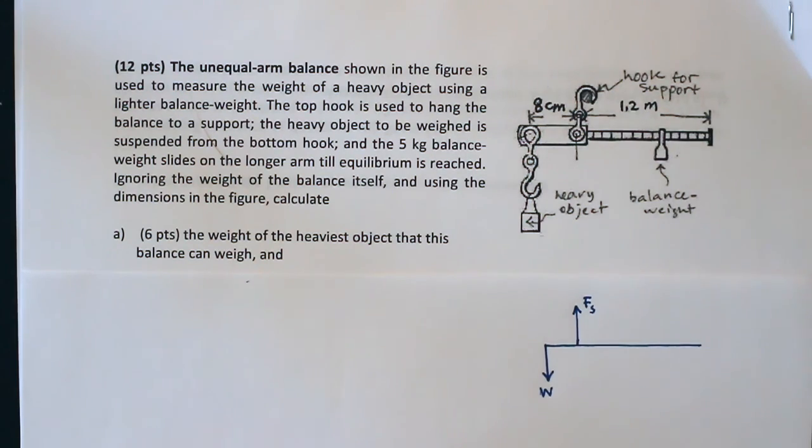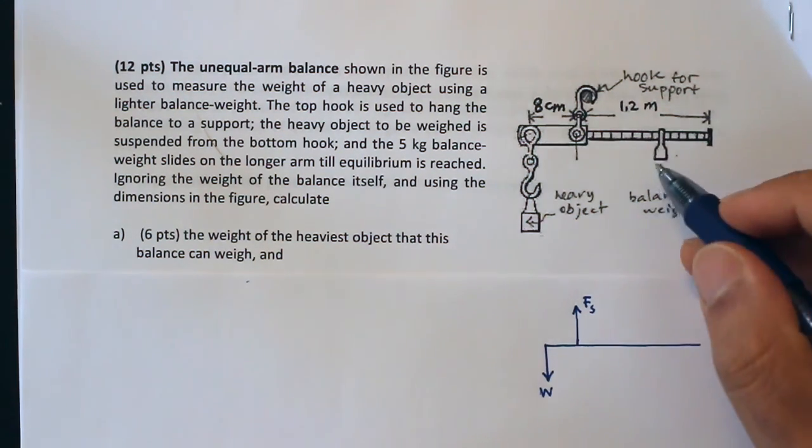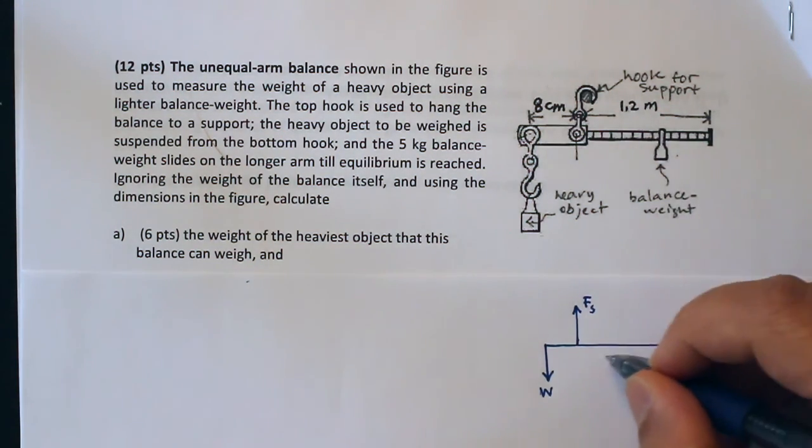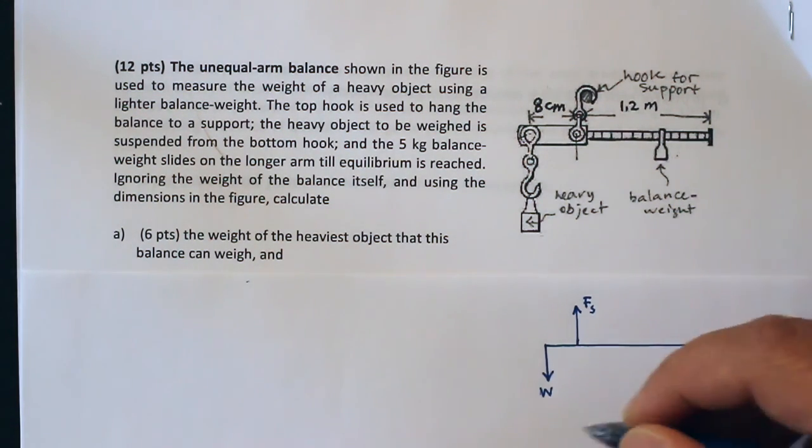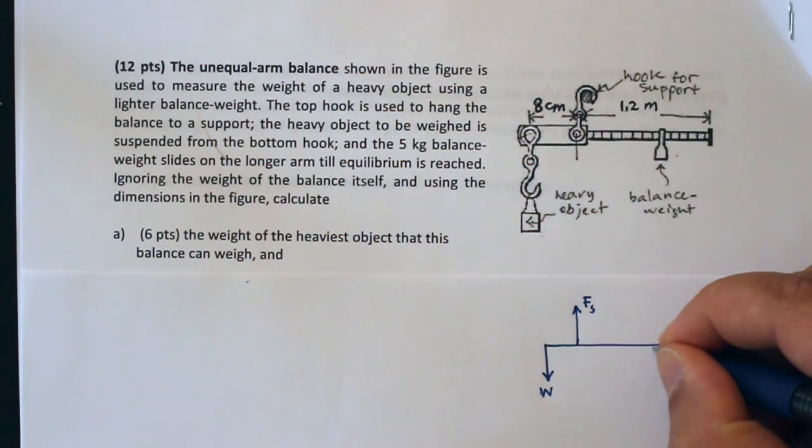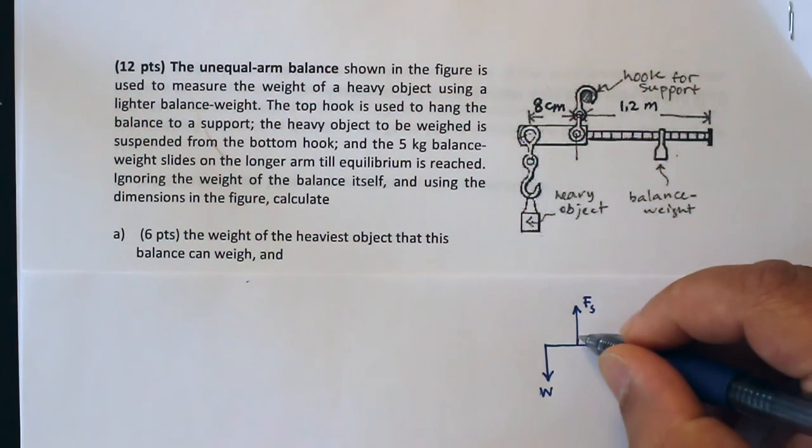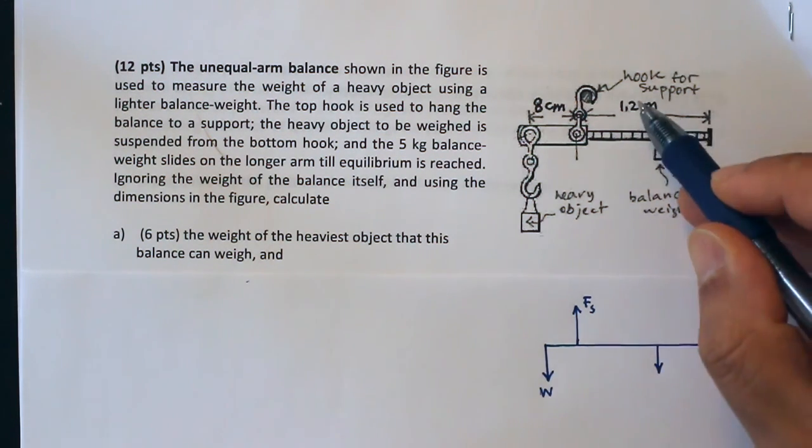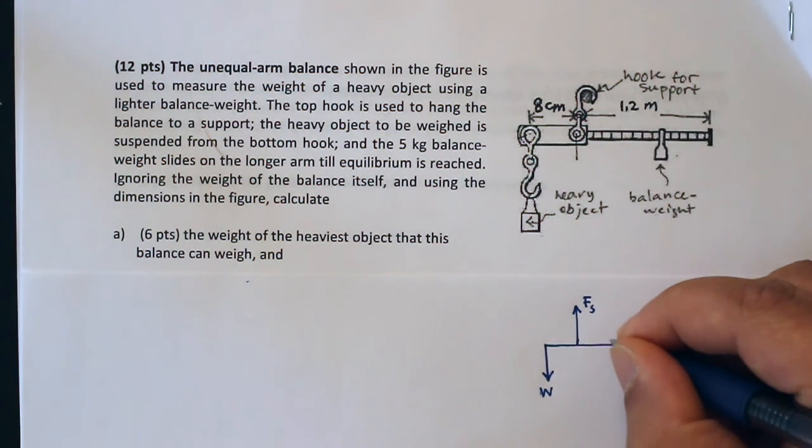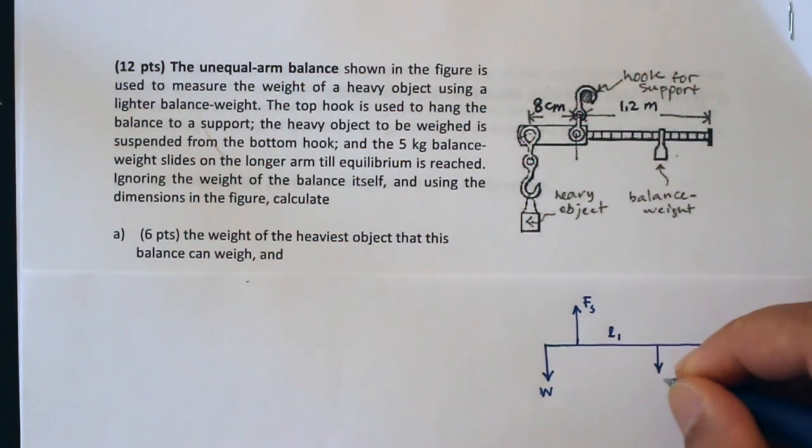And then the balance weight can be anywhere on here. I imagine it's going to be at the very tip here for the maximum weight, but I can just put it anywhere I want, knowing that the maximum distance here could be 1.2 meters. And I'm going to call this the lever arm for this force, which is the force due to gravity on the balance weight.